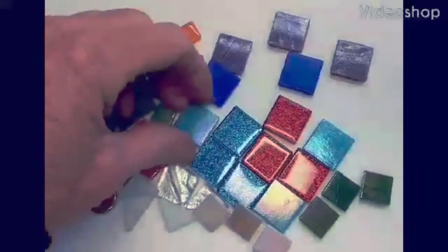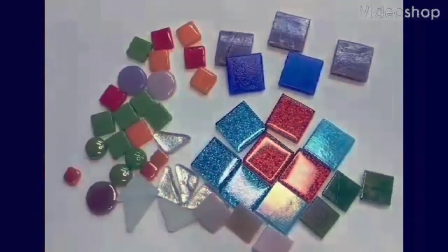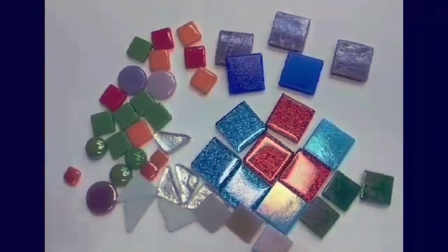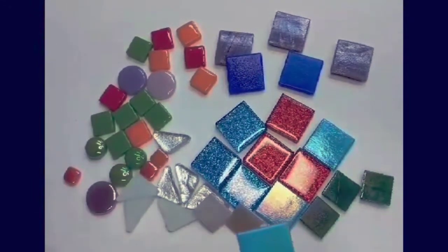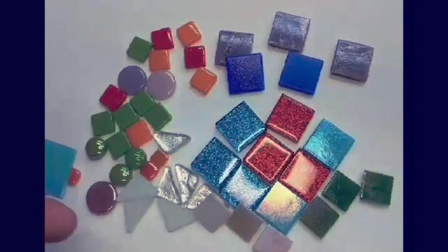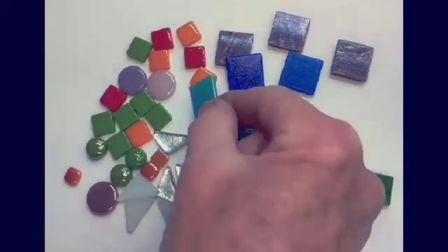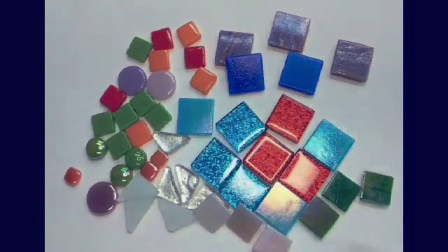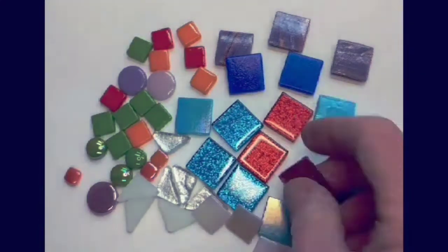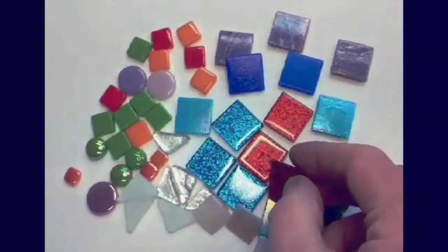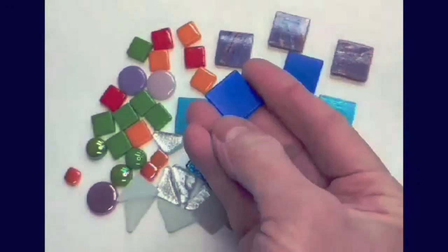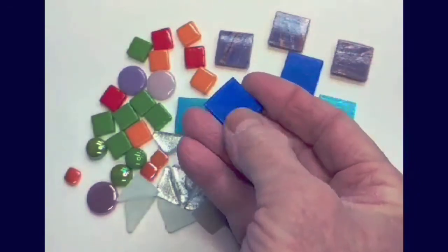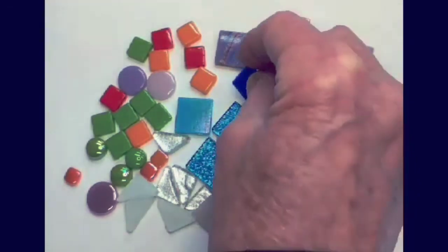Take a look at some of this gorgeous glass that's included in your kit. I always say what makes a beautiful mosaic is using beautiful materials, and this glass is gorgeous. Now, since it's glass, of course, it's rated okay to use outside. I love this sparkly glass. Isn't this fun? And this beautiful, smooth glass called Pastille glass. This is all glass that is molded.